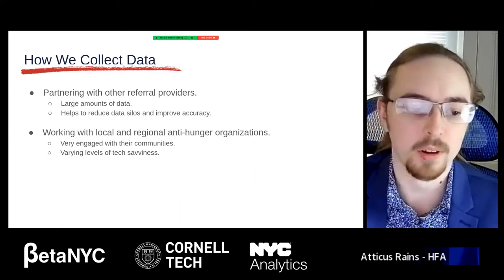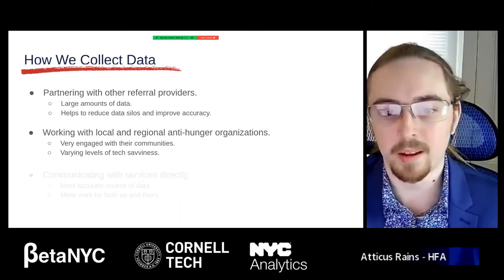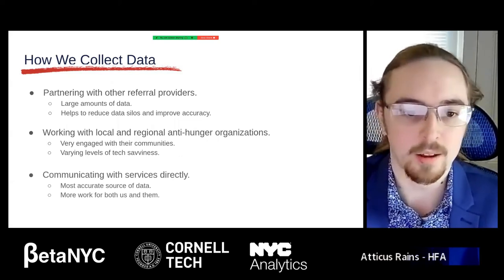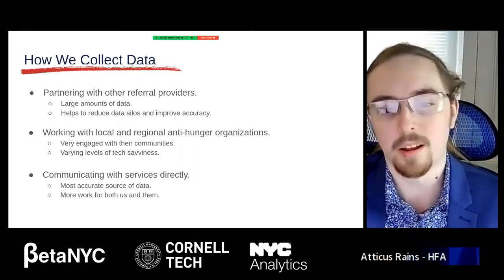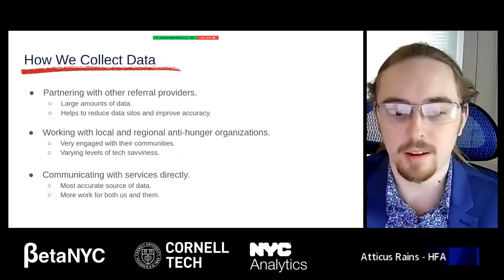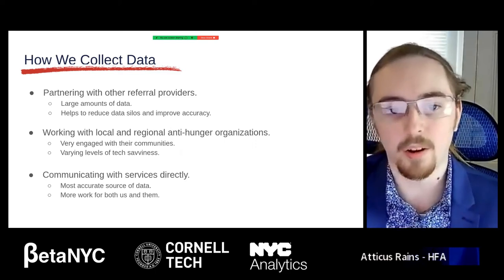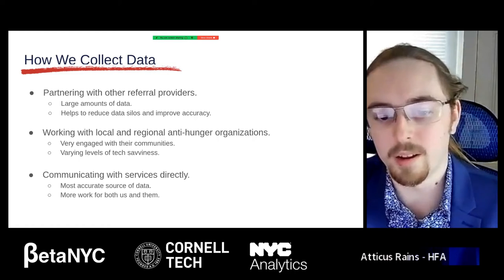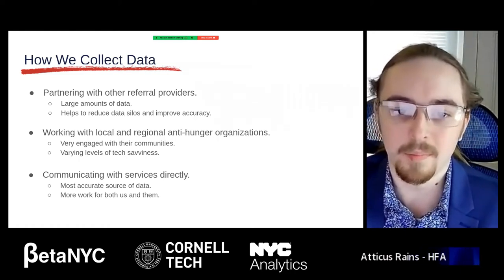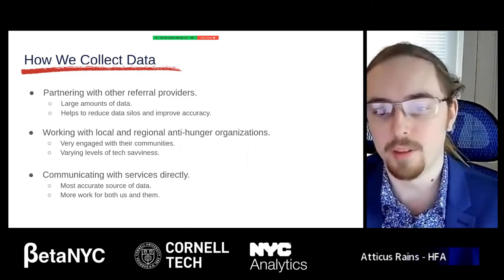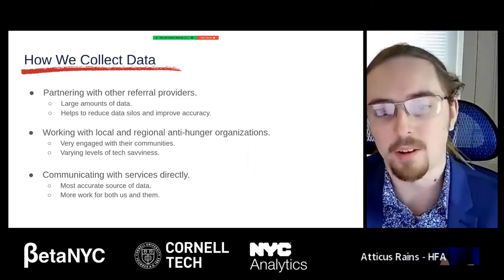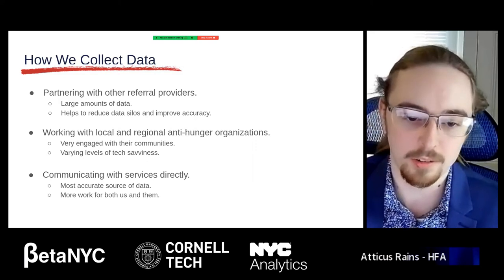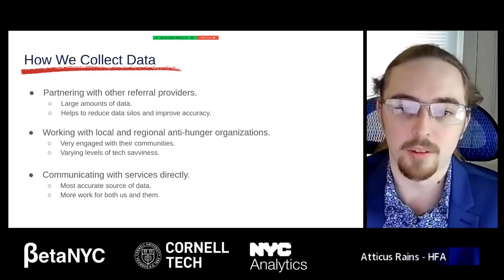We have three main data collection streams. At the highest level, we have partnerships with other data referral providers and large databases that have large amounts of data for the entire country — great for reducing data silos and duplicative work. At the next level, we have local and regional anti-hunger organizations, which is really where we got our start. And finally at the most granular level, it's communicating with the services directly. We stand out by combining all of these data streams into one, cross-checking large data providers with local organizations, then filling in gaps and verifying with the services directly.